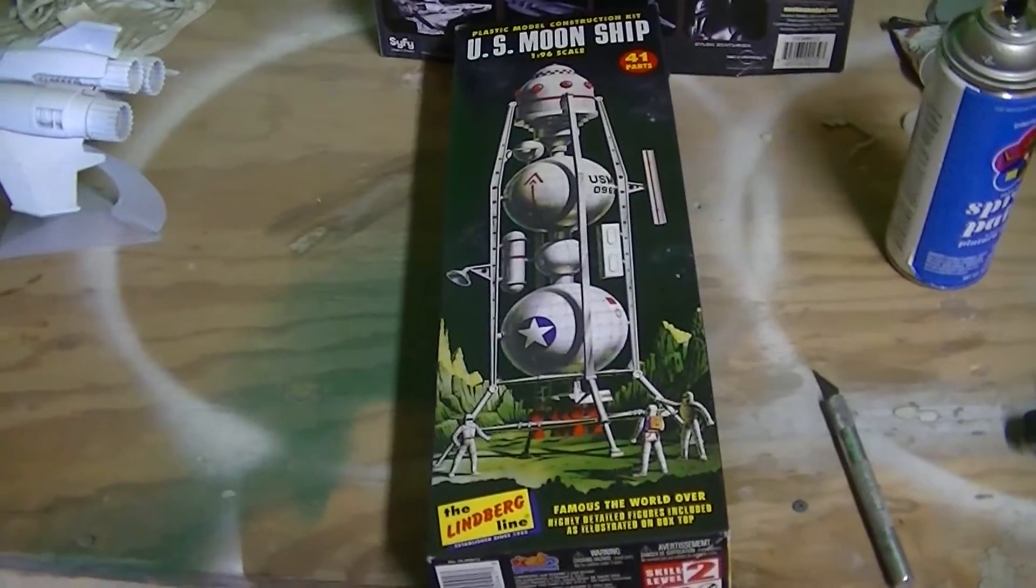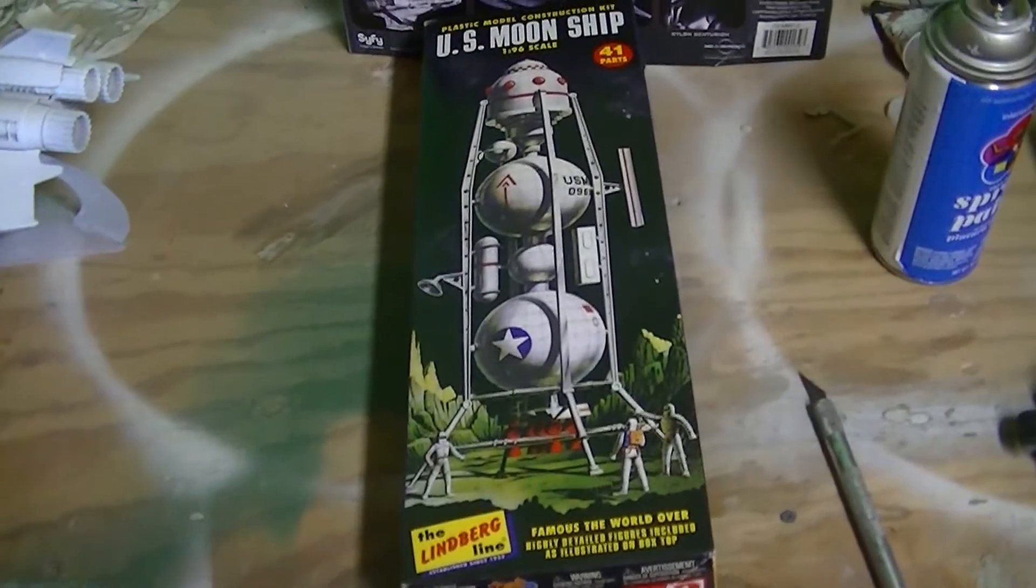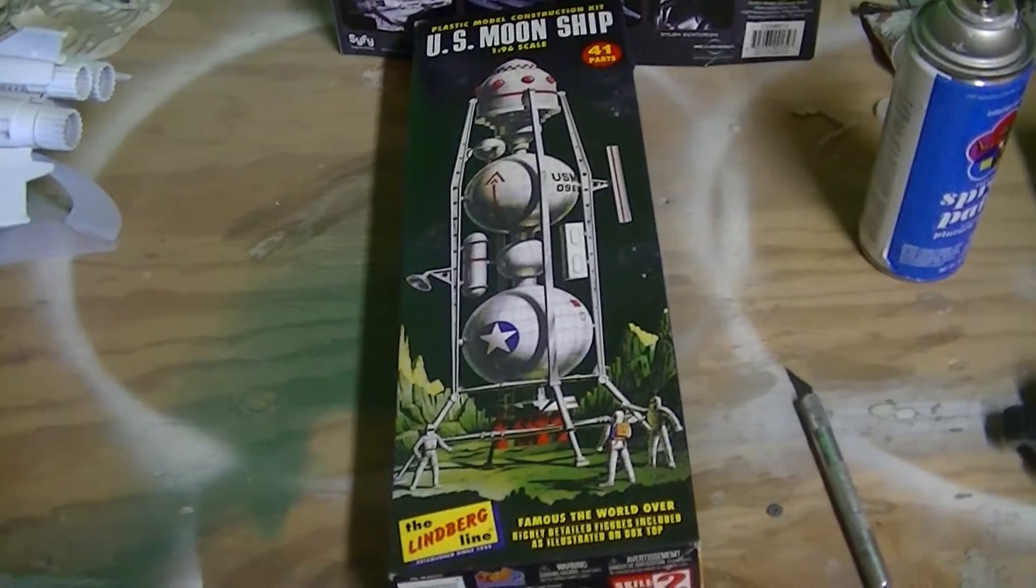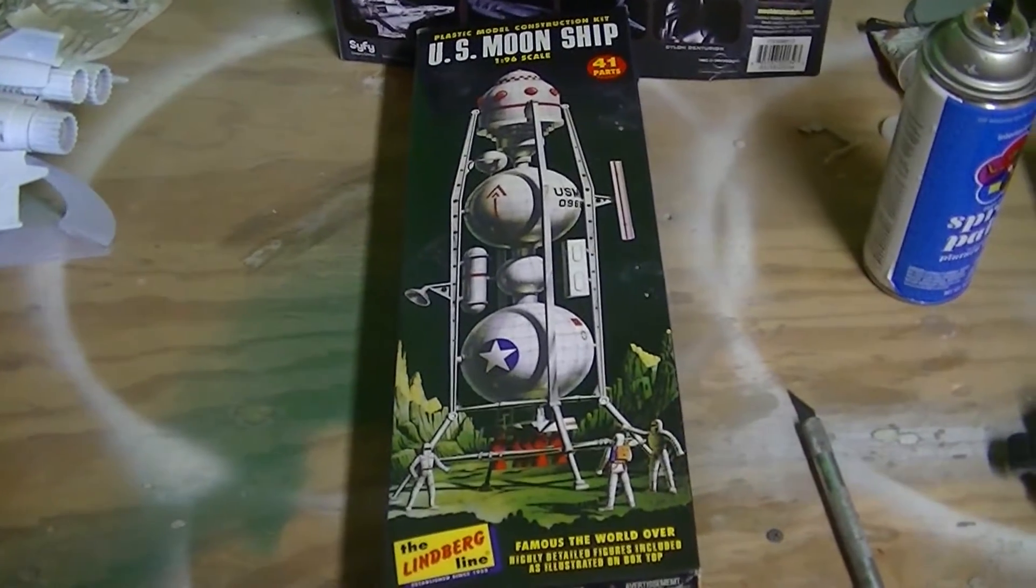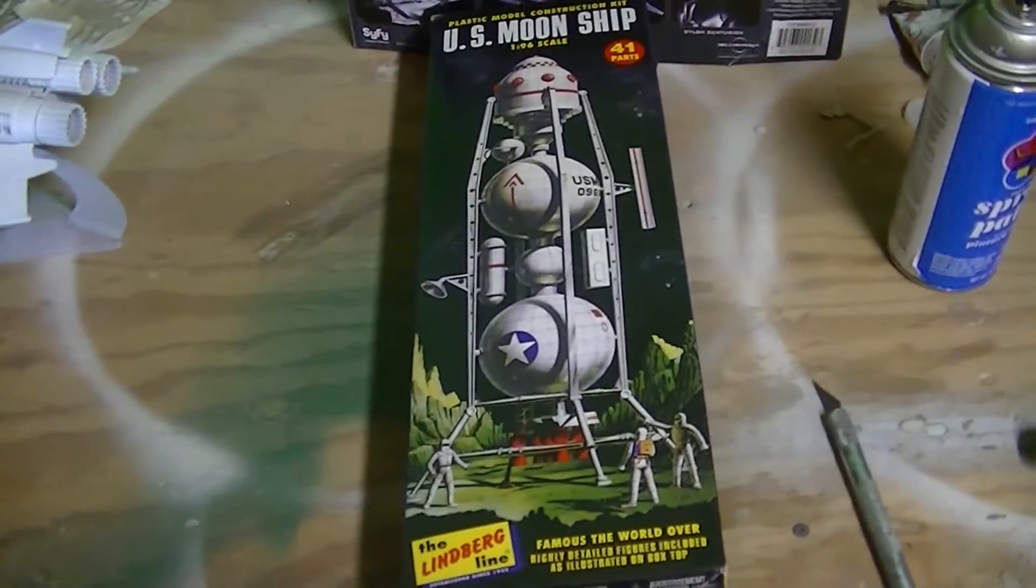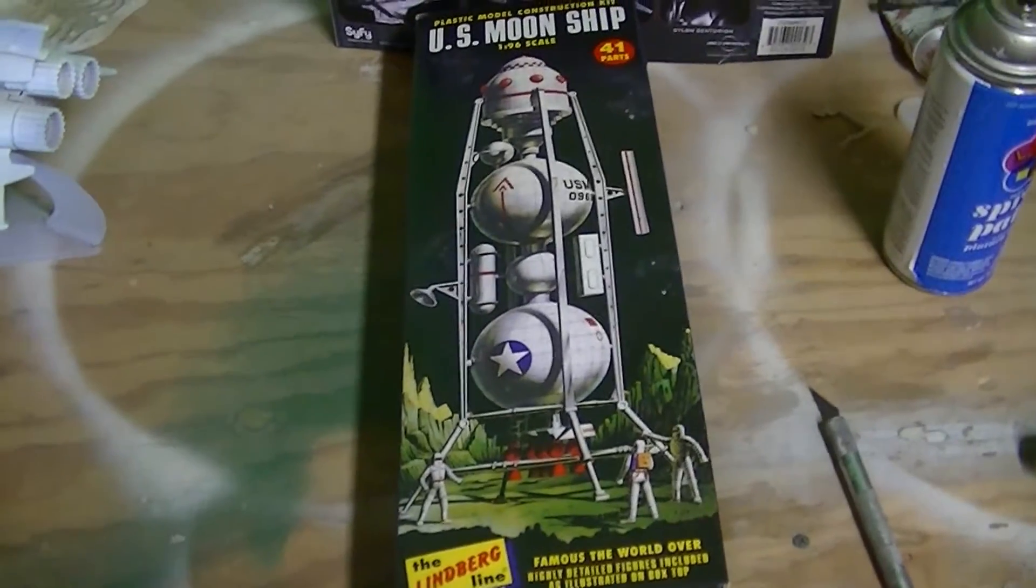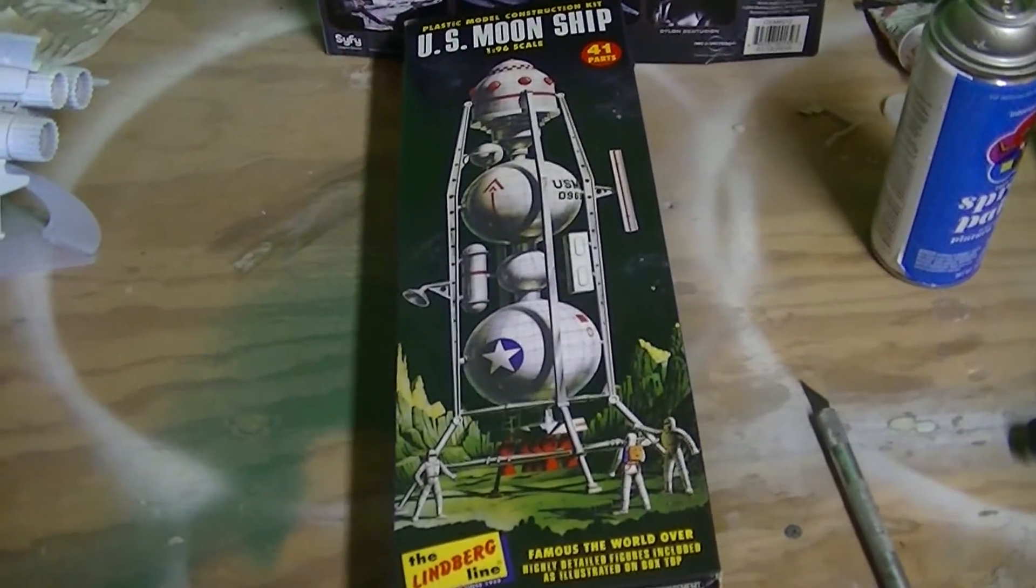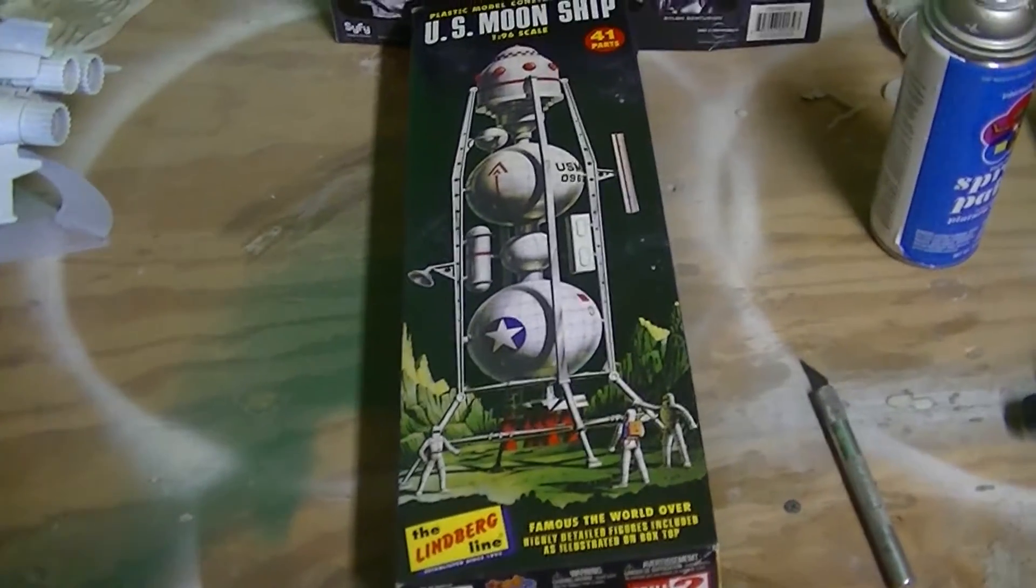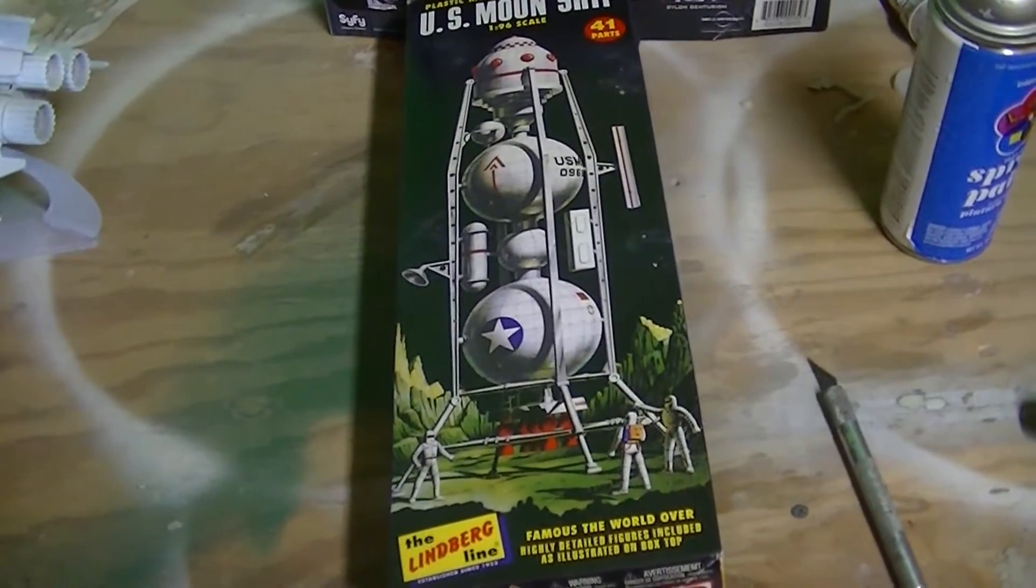Here we have another Lindbergh model kit review. This is a retro 1960s old school moonship 1/96 scale from Lindbergh. This is an old kit, a repop of an old kit. I didn't even realize until I had the box open and shut off the lights to the garage that it glowed in the dark. Great kit, I mean it's a great retro kit.